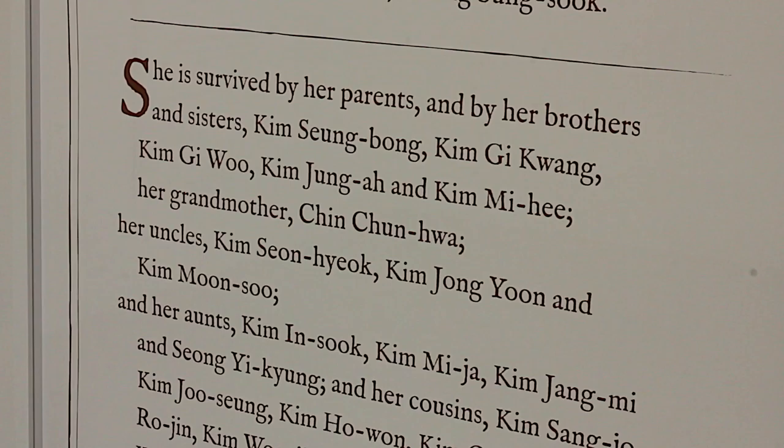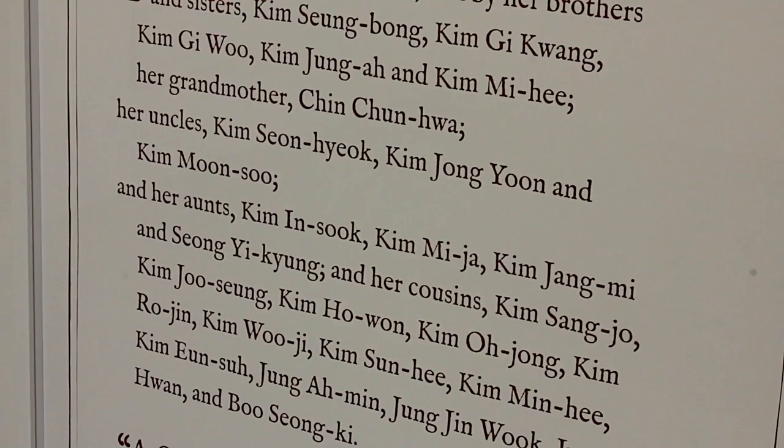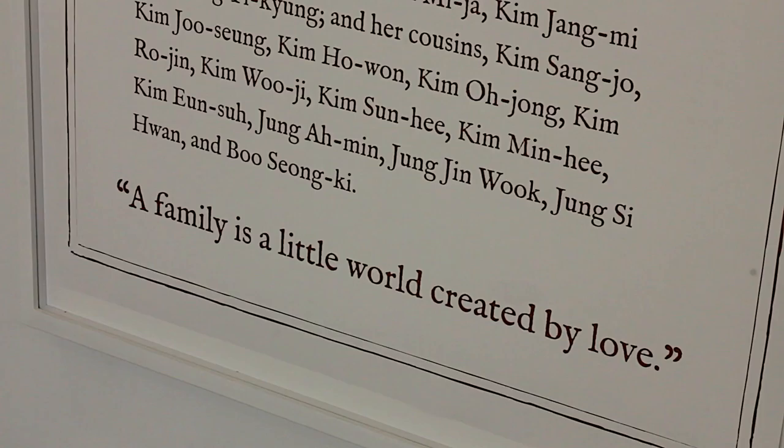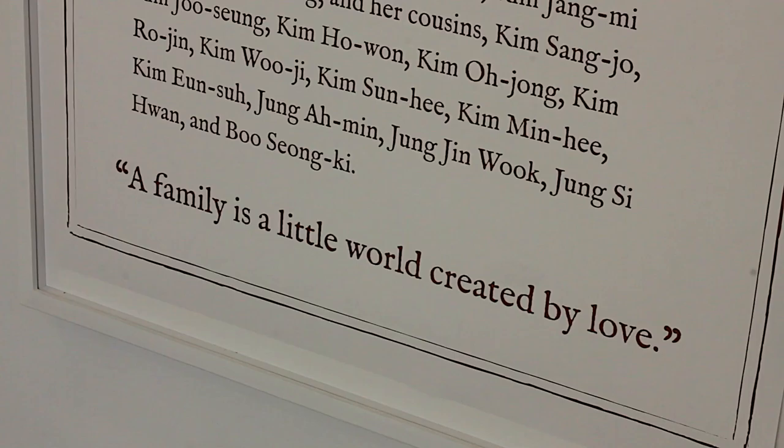Her uncles Kim Sung-hyuk, Kim Jung-yoon, and Kim Moon-soo, and her aunts Kim In-suk, Kim Mi-ja, Kim Jang-mi, and Sung Yik-kyung, and her cousins Kim Sang-jo, Kim Joo-sung, Kim Ho-hwan, Kim O-jung, Kim Ro-jin, Kim Woo-ji, Kim Sun-hee, Kim Min-hee, Kim Eun-seo, Jung A-min, Jung Ji-wook, Jung Si-hwan, and Boo Sung-hee. A family is a little world created by love.